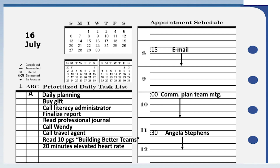Daily planning gets an A — until it becomes a habit, it's the most important part of my day. The gift: I was supposed to do something for my wife and I forgot, so on my way home tonight I'll buy her daisies — she loves them. A, B, or C? Call literacy administrator is an A because we're up against a deadline. Finalize the report is a B. Reading the professional journal is a B. Wendy is a C — she said she might find the information on her own. Call the travel agent is a B. Ten pages of the book ties into personal goals.